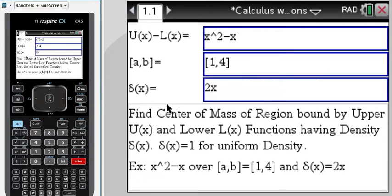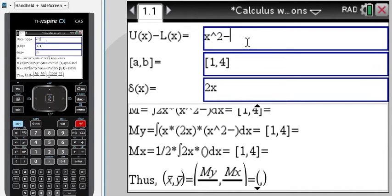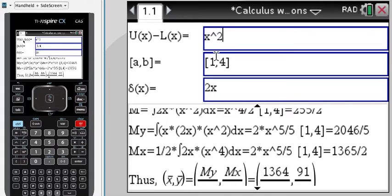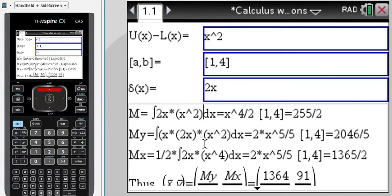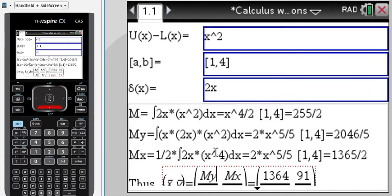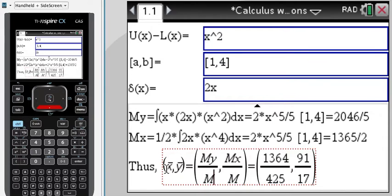You click on it and enter your two functions. If you have an upper and lower function, if you only have an upper function u of x, then ignore l of x the lower function. Enter an integral, enter the density function, and then you can just scroll down and see the computation that is needed to find the center of mass for two dimensions. You see x bar and y bar here computed as my over m, mx over m.